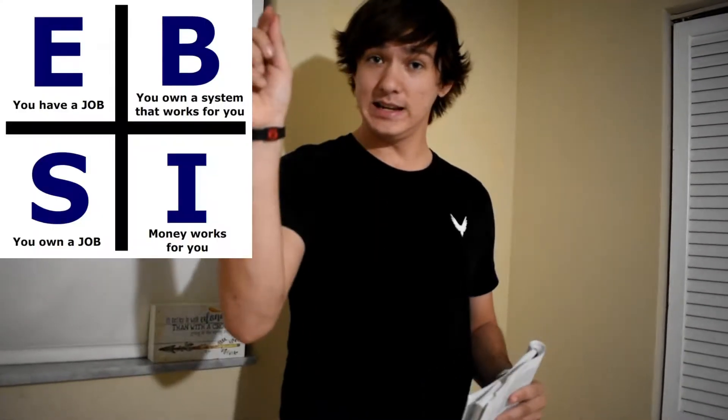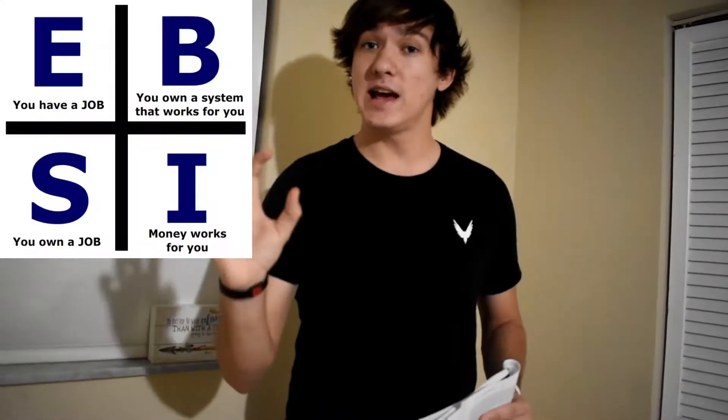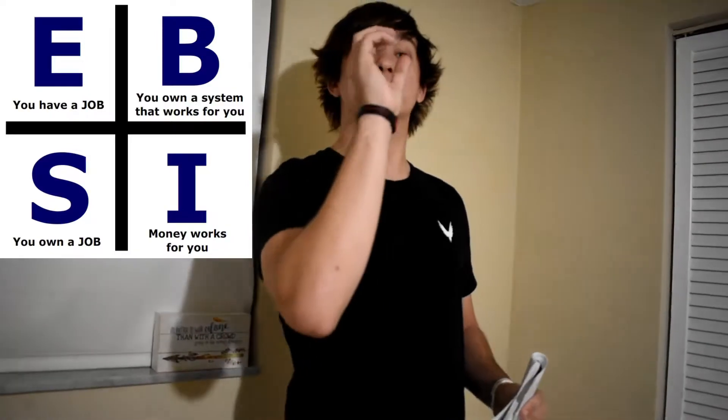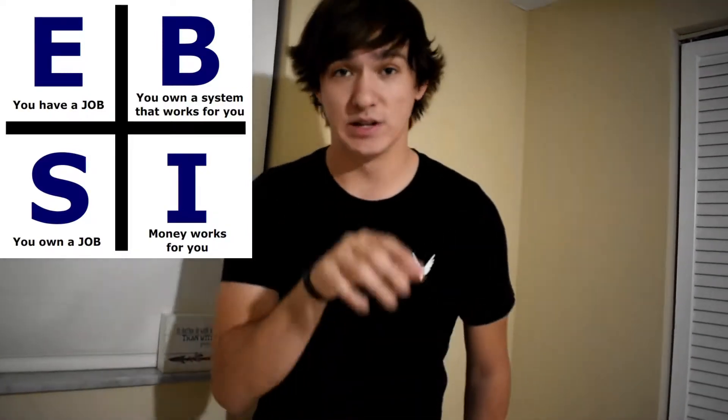Today I'm going to be talking to y'all about money maps and where you might be located on this money map. So let's get into it. There are basically four different quadrants on this money map: E, S, B, and I.